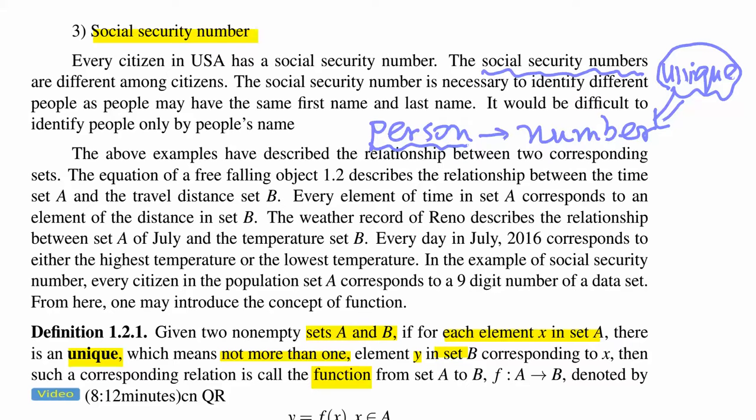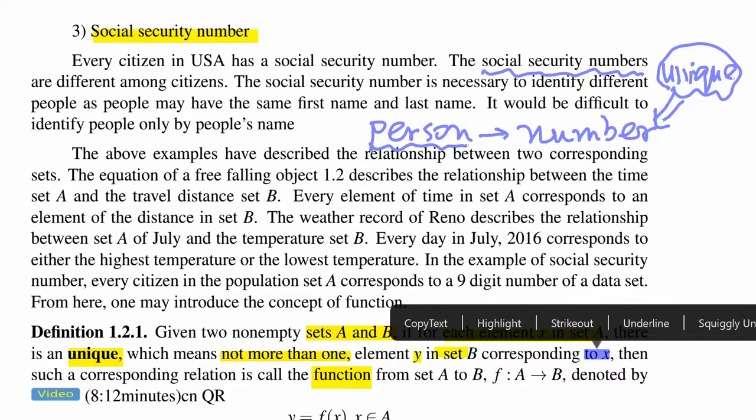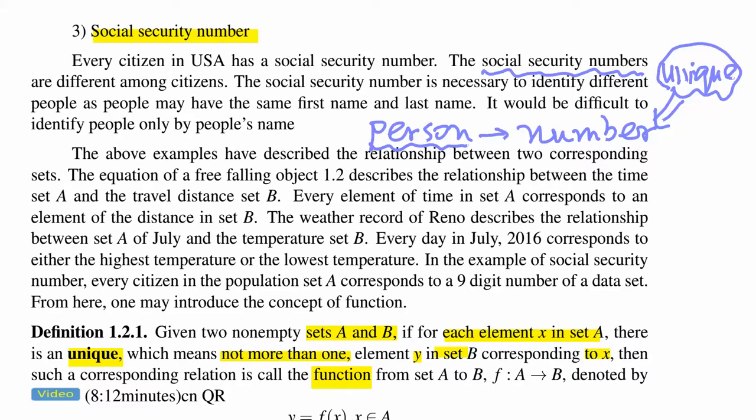Corresponding to the given X. Corresponding to the given X. So then in this case, we say such a correspondence, such a correspondence relationship, relation, is called the function from where? From set A to B.